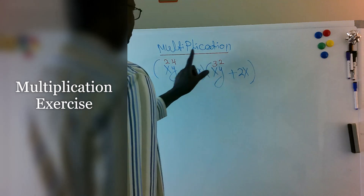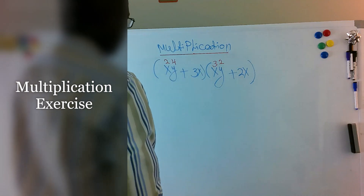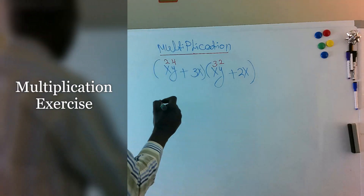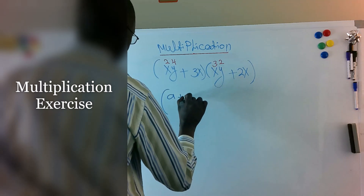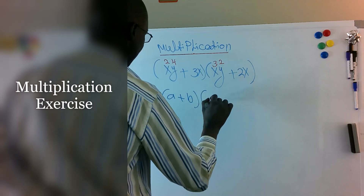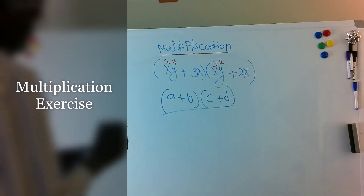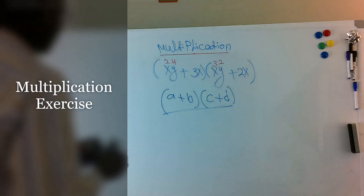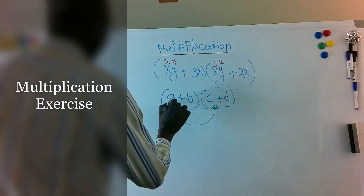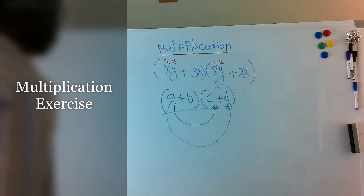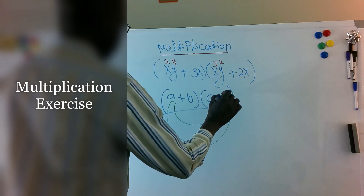We're going to combine the exponents on top — so we combine two with four and we get six. The rule for multiplication here is when we have (a + b) times (c + d), what we do is multiply a by c, then a by d. The second part: b times c plus b times d.